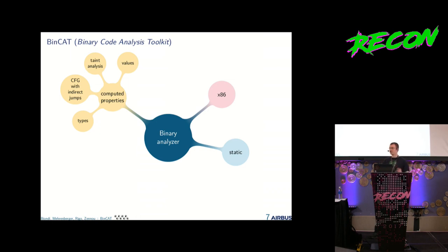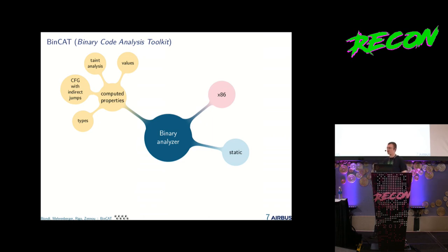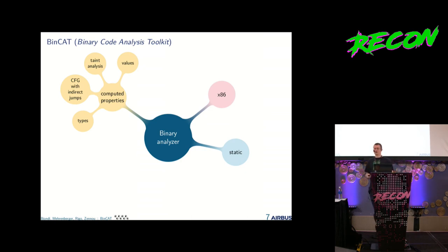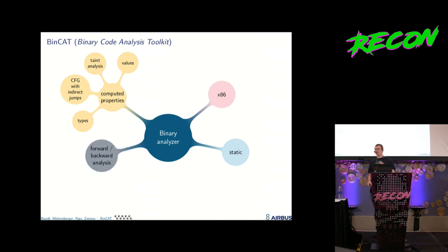The goal is to compute properties over the code we analyze, and we can analyze several things at the same time. The first is values: we compute values for registers and memory and track them over the static execution. We can also run bit-level taint analysis at the same time to follow the data flow for a particular register or memory. We can also reconstruct indirect jumps using value analysis, and recover some types.